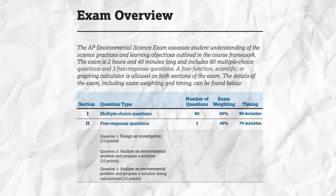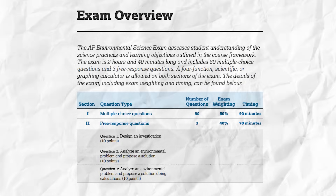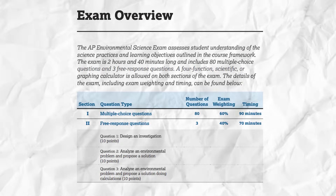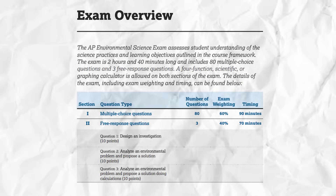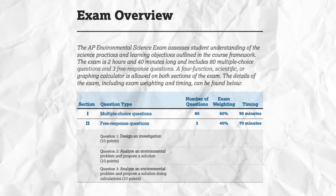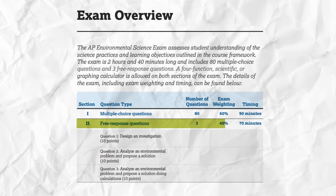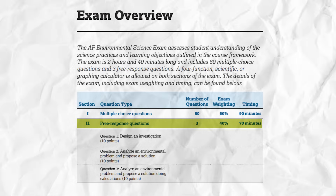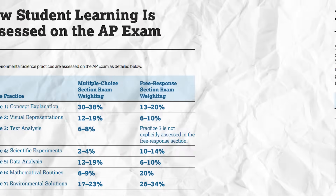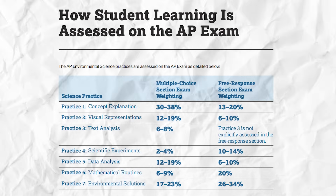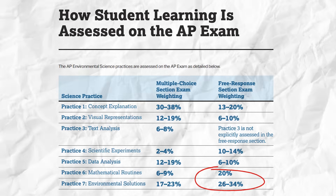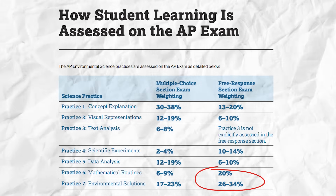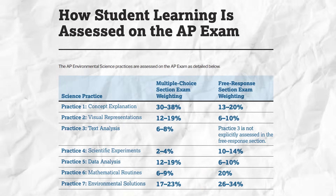Now onto the FRQ section of the exam, where we have even more clarity about the structure. After a 10-minute break between sections, you'll have 70 minutes to answer 3 FRQs, each worth 10 points. Environmental problems and solutions and math will make up close to half of these 30 FRQ points.